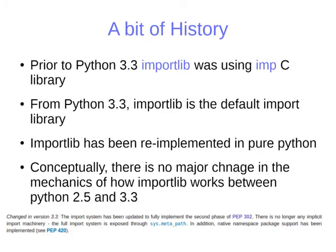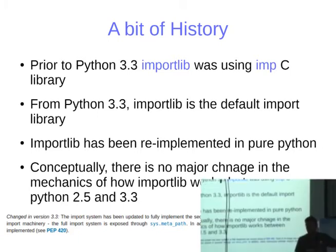This has exposed a lot of internals so you can really go back and do customization if you want. Conceptually nothing has really changed — the overall orchestration of how it was working in 2.5 and onwards is the same — but in 3.3 the internals are specific to the Python implementation.